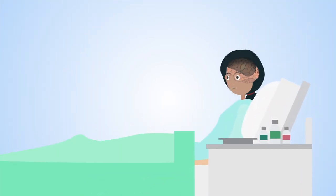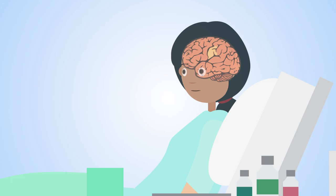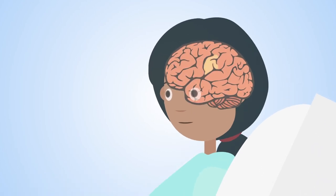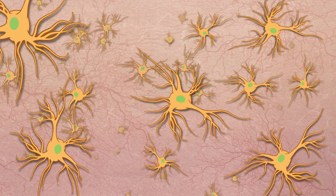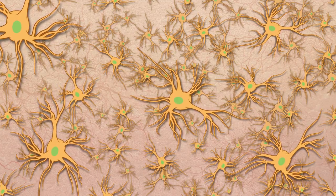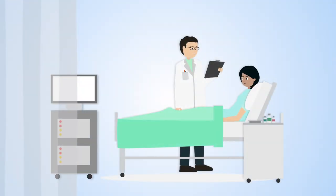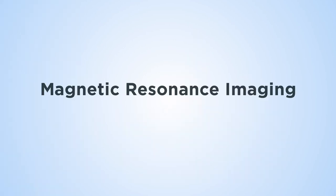Glioblastoma multiforme is a destructive and fast-growing brain cancer. It develops from glial cells in the brain and is the most common cancerous brain tumour in adults. Day-to-day monitoring of patients relies on the two-dimensional imaging technique known as magnetic resonance imaging, or MRI.